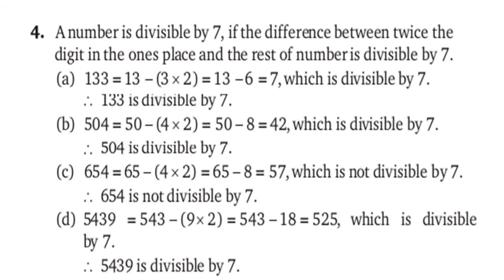Now, 136 minus 7 — so 7 is divisible by 7, therefore 133 is divisible by 7. Now see part D: 504. Ones place is 4; multiply 4 by 2 to get 8. The other number is 50, so 50 minus 8 is 42. Since 42 is divisible by 7, 504 is divisible by 7. Now part C: 654 — ones place 4, multiply by 2 gives 8; 65 minus 8 is 57, which is not divisible by 7. Now similarly solve part D.